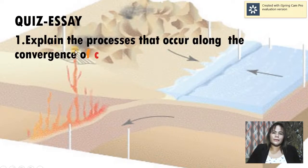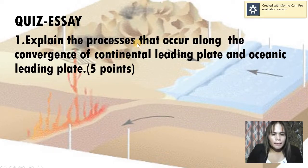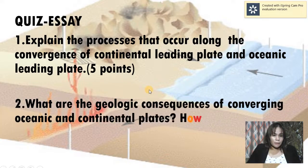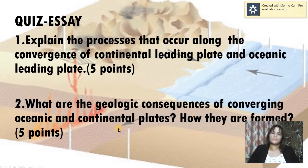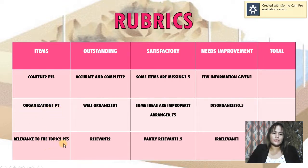We're done with that, and now we have a quiz with two questions, each worth five points. Question one: Explain the process that occurs along the convergence of a continental leading plate and an oceanic leading plate. Question two: What are the geologic consequences of converging oceanic and continental plates and how are they formed? The rubric includes content for two points, organization for one point, and relevance to the topic for two points.